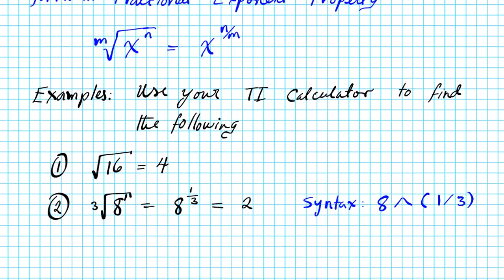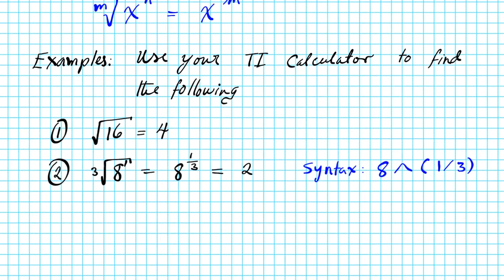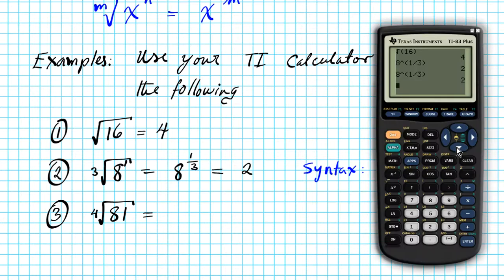Let's try another example. Number 3. Now what I'd like you to do is write down this problem: the fourth root of 81. Enter it in your calculator. So what you're going to do is try and do this problem without referring to what I did earlier. So enter this into your calculator and then see what the answer is. You can pause this video while you do that entry.